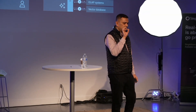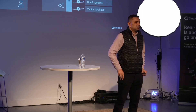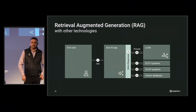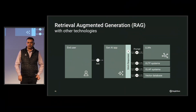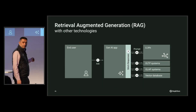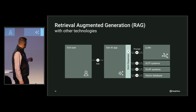This goes back to the point Raj was making — adding another purpose-built vector database will over-complicate your architecture. This is a very common pattern. When you bring in another vector database, your RAG pattern and your Gen AI application becomes over-complicated because it needs to talk to at least three different systems.